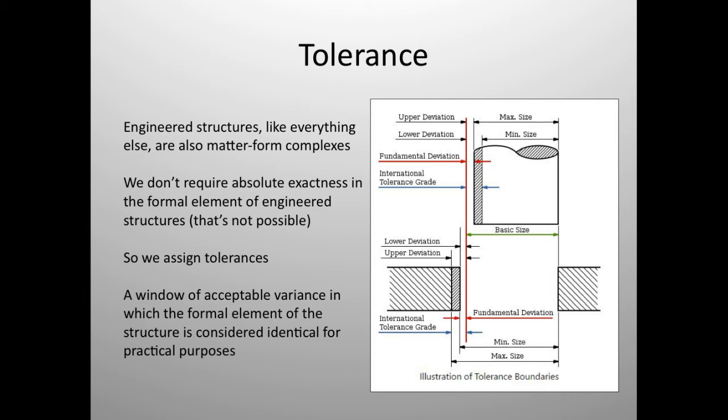how could we design in that imprecision? So one concept from a design stance that I could apply is tolerance. So in engineered structures, just like going to the Aristotelian view of this, every object is a matter-form complex. And so engineered structures also have a matter and a form that's a formal element to them. And we don't require absolute exactness in the formal elements of an engineered structure. It's just not possible. We don't get down to the level of subatomic particles in our designs. That would just be crazy. So we assign tolerances. We look at what the form, fit, and function of the piece is and say, okay, what variance is going to be allowed where it performs exactly the same for all practical purposes?